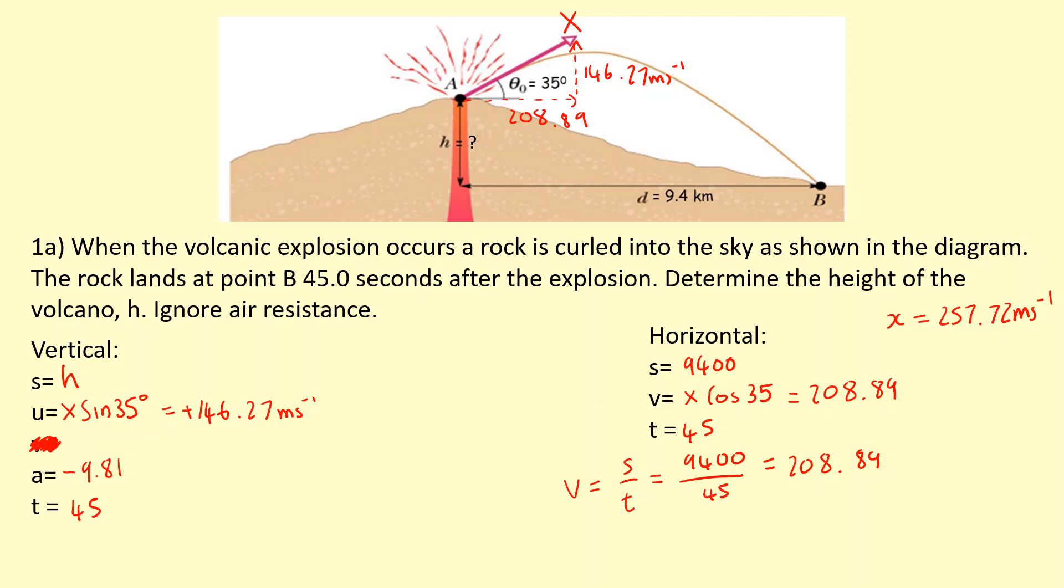Now we can solve this part as well. We're going to use the equation without the v in it, which is s equals ut plus half at squared. s is the height we're interested in: 146.27 times 45 plus half times minus 9.81 times 45 squared. Add this together and you should get minus 3350 meters, which is 3.4 kilometers. That's the height of the volcano.